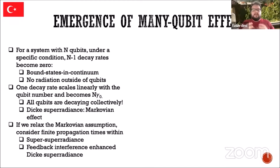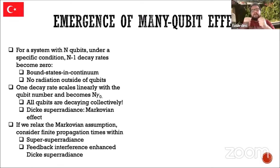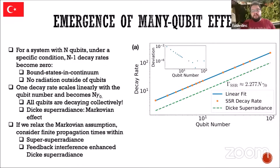So what happens when we relax the Markov approximation — when we take into account the finite qubit propagation time within the system — is that we are still seeing n minus one decay rates going to zero, so the bound states in continuum are still there. But something weird happens to Dicke superradiance. You would expect it would take a little more time for the qubits to decay. But what happens is the feedback of the photonic wave functions being emitted is aligned such that the decay is actually increased. That's called super-super radiance. You get a decay rate stronger than Dicke superradiance due to a positive enhancement effect from quantum coherence feedback — it's a full non-Markovian effect you wouldn't see in a Markov approximation.